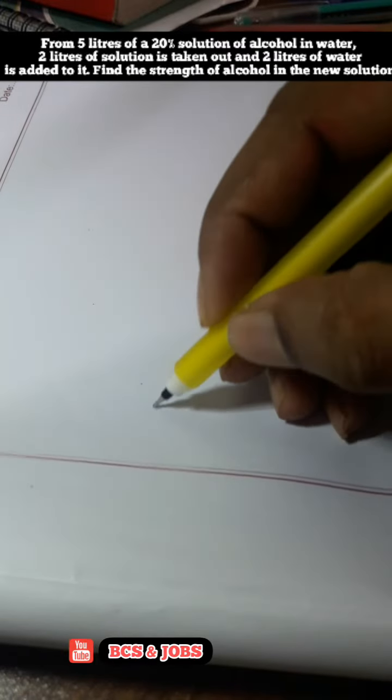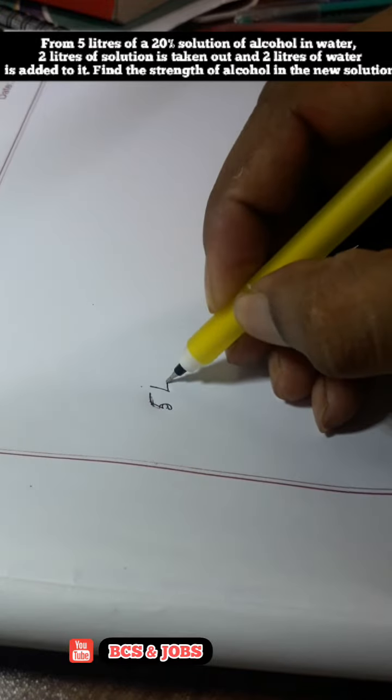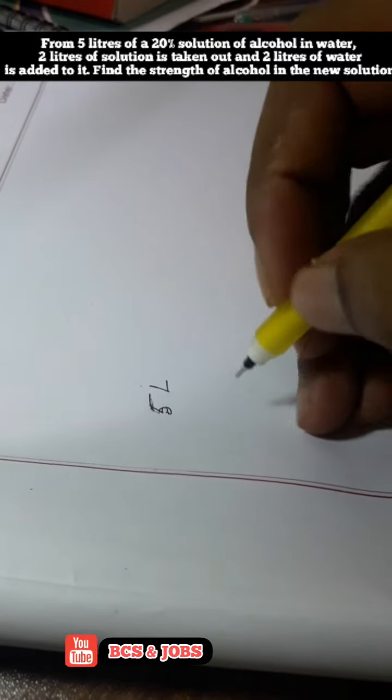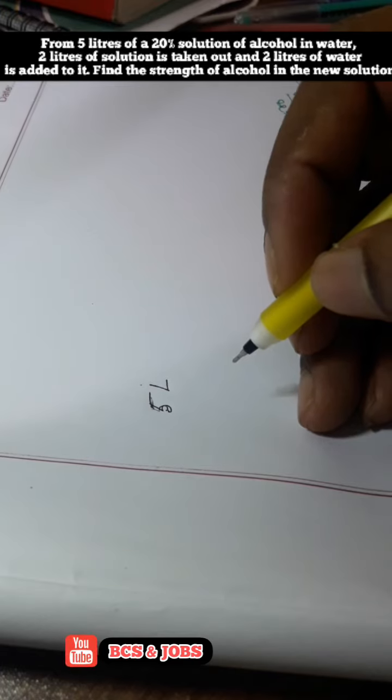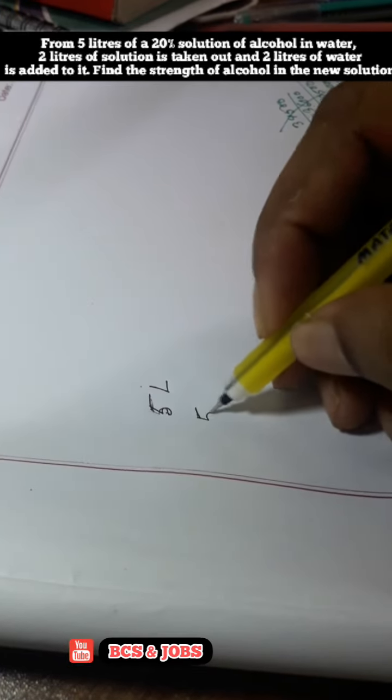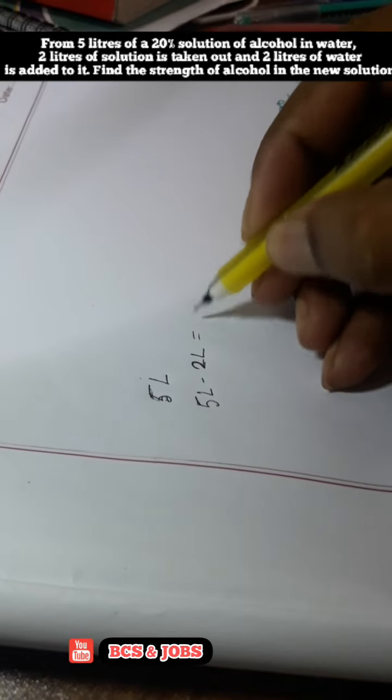So here 2 liters of solution is removed and 2 liters of water is added. The process is repeated to determine the final alcohol concentration.